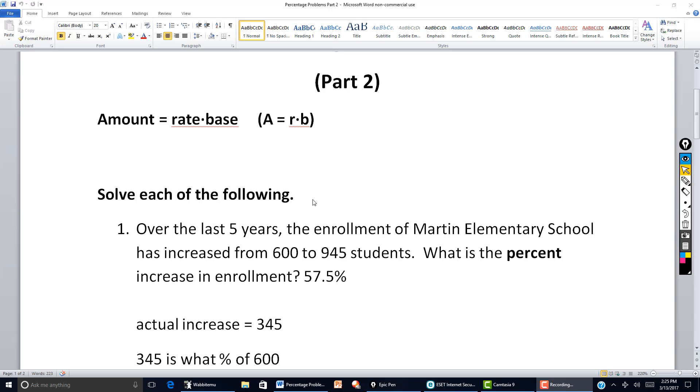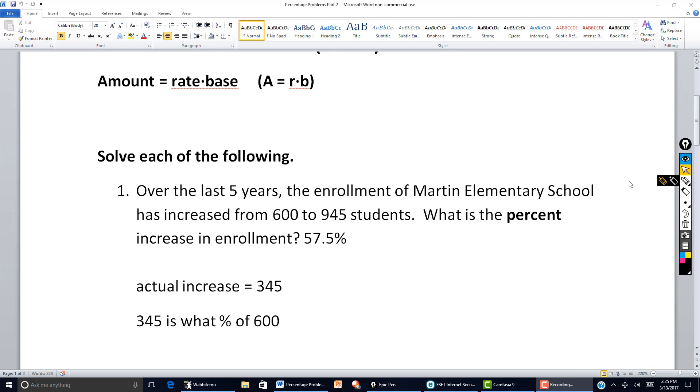Over the last 5 years, the enrollment of Martin Elementary School has increased from 600 to 945 students. What is the percent increase in enrollment? The answer is 57.5%. We're looking for the percent increase.